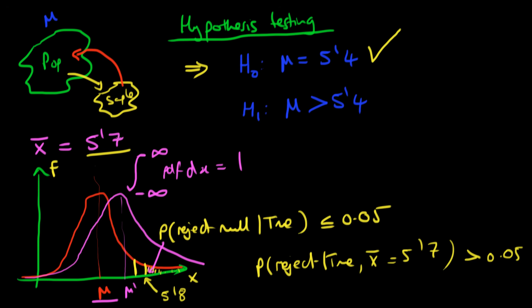If it was actually the case that we found our sample mean equal to 5'9", then the probability of rejecting the null hypothesis given that it was true would be less than 0.05. So we would say it's really unlikely that the null hypothesis is actually true, and we would reject it. We wouldn't accept the alternative, but we would reject the null hypothesis. That's the idea behind hypothesis testing at a very high level, and in future videos we'll talk about this in a little bit more depth.